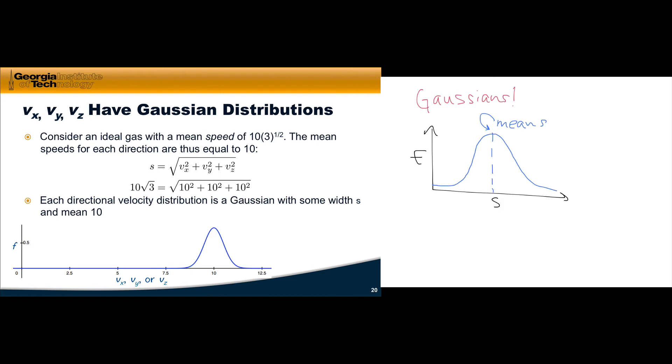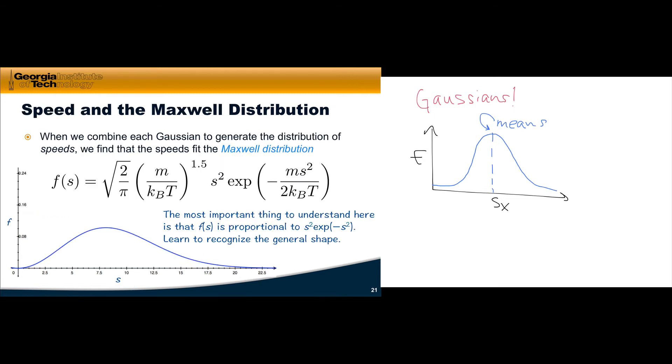Let's think about this in a little more detail and see how these independent Gaussians in x, y, and z lead to an isotropic three-dimensional distribution. Consider an ideal gas with a mean speed of 10√3, which looks a little bit weird. But notice that if the overall speed is equal to √(vx² + vy² + vz²), then we can see that each of the individual velocity components has a mean speed of 10. 10√3 equals √(10² + 10² + 10²). So each directional velocity distribution in this hypothetical gas is a Gaussian with some width σ, and we'll talk about the width in a second, and a mean centered on 10.